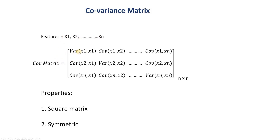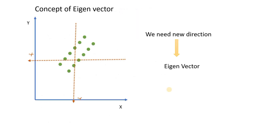The covariance matrix is one of the important steps in PCA. If we have n features, the covariance matrix is an n×n matrix where the diagonal elements are the variance of each feature (e.g., covariance of x1 with x1), and the off-diagonal elements are covariances between pairs of features (e.g., x1 and x2). Notably, the covariance of x2 and x1 equals the covariance of x1 and x2, making it a symmetric matrix.